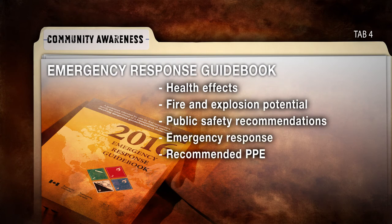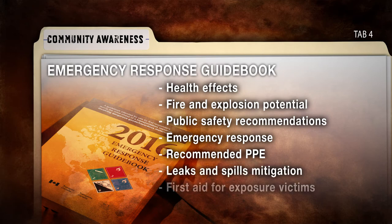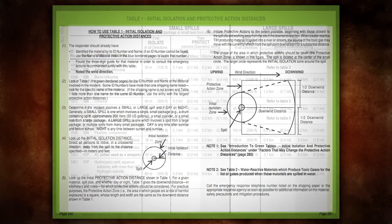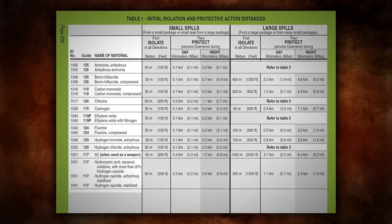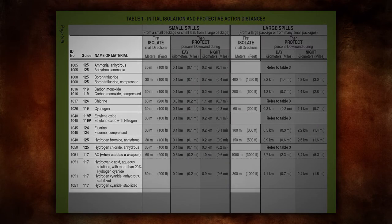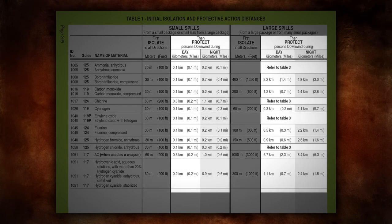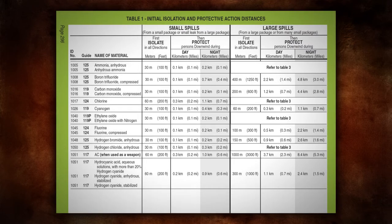The guides also include recommended protective clothing, steps to take for leaks and spills, and immediate first aid for exposure victims. The green pages in the guidebook include initial isolation distances. The information is contained in a table that includes each chemical and the distances to immediately isolate the area around the spill or potential spill and the distances to further protect downwind. These distances are meant to give first responders some guidance as to the degree of danger posed to the public by a leak or spill of the listed chemical.